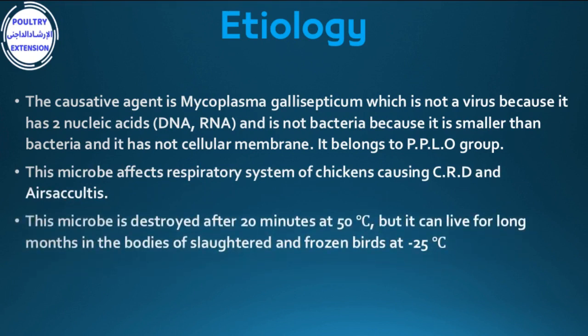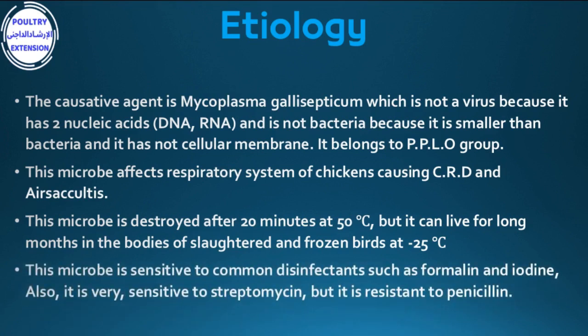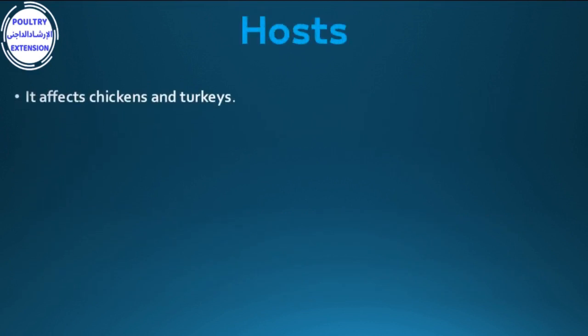This microbe is destroyed after 20 minutes at 50°C, but it can live for long months in the bodies of slow-start and frozen birds at minus 25°C. It is sensitive to common disinfectants such as formalin and iodine, and very sensitive to streptomycin, but resistant to penicillin. It affects chickens and turkeys.